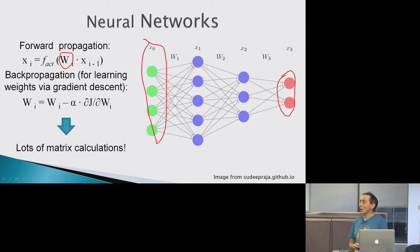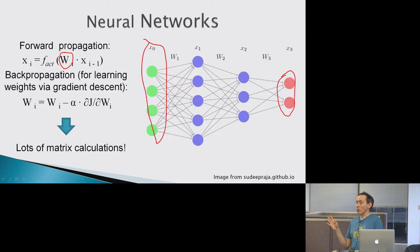Someone asked why all the winning teams used convolutional neural networks. Right now, if you want to predict something on images, convolutional neural networks usually give much better results than anything else. Specifically for images, that's what everyone uses.